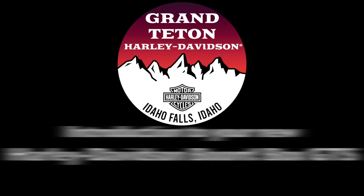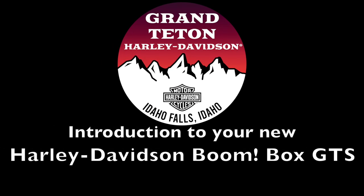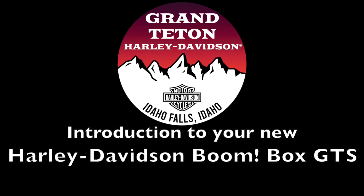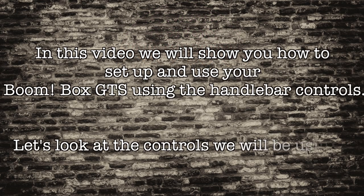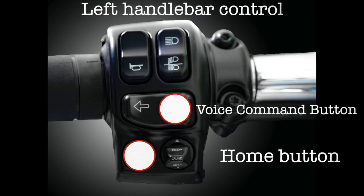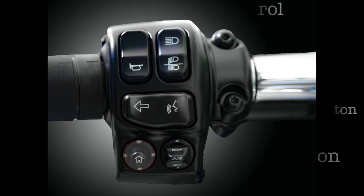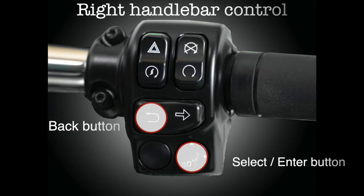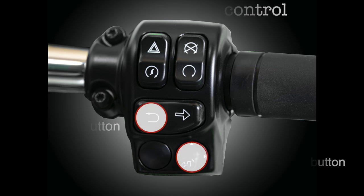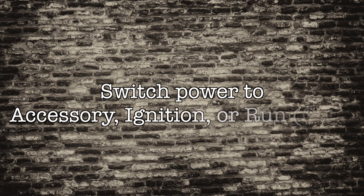Welcome to Grand Teton Harley-Davidson's Boombox GTS tutorial. In this video we're going to show you how to set up and use your Boombox GTS using the handlebar controls. So let's take a look at the controls that we'll be using. On the left handlebar control we're going to be using the home button and the voice command button. On the right handlebar control we're going to use the back button and the select enter button. Let's get started.